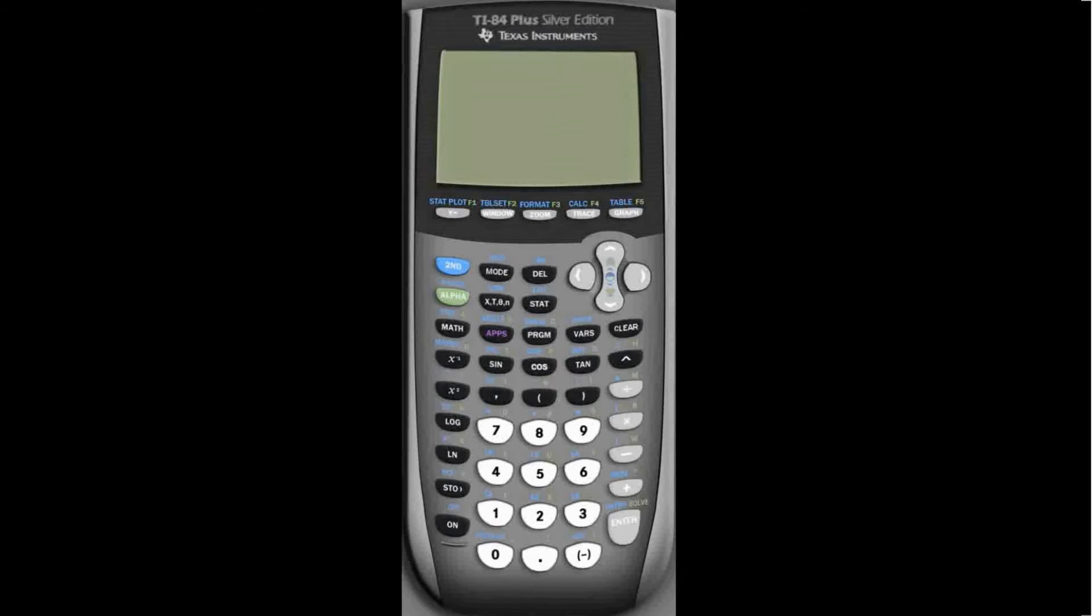On TI calculators, we go into radian mode with the mode button. Above the sine, cosine, and tangent buttons are blue versions with a negative 1 subscript. These are the inverse functions, so press the blue second button and the tangent button. We press 2 as our argument, close the parenthesis, and press enter to see the answer of 1.107 radians.